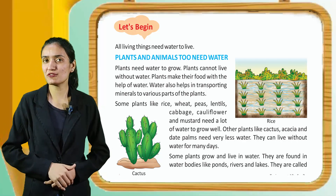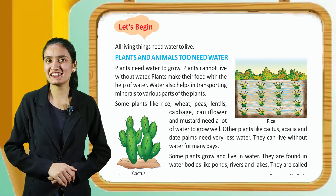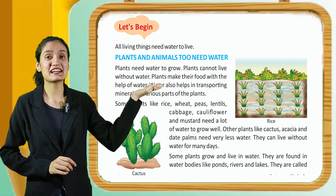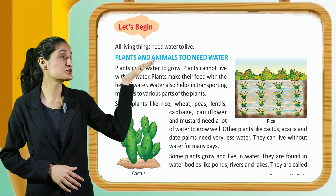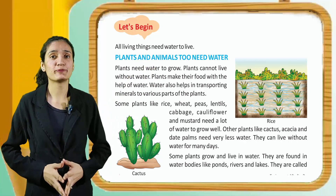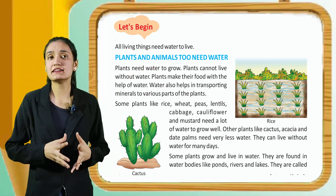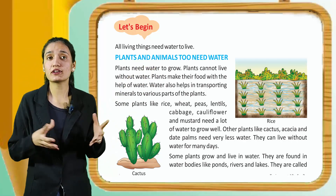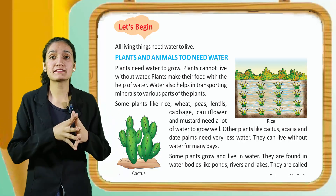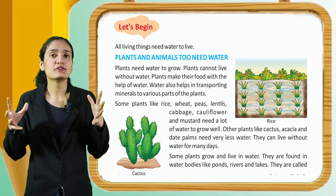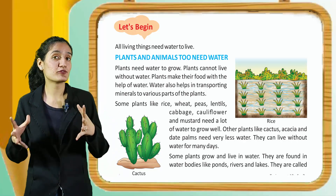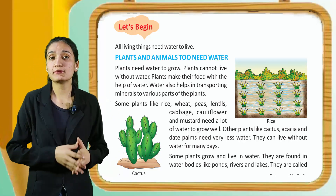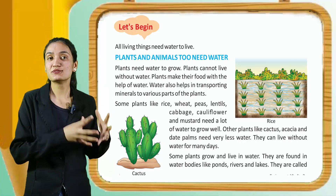Now let's begin. All living things need water to live. Kids, you also drink water regularly. Plants and animals too need water. Plants need water to grow. Plants cannot live without water. Plants make their food with the help of water. Water also helps in transporting minerals to various parts of the plant.